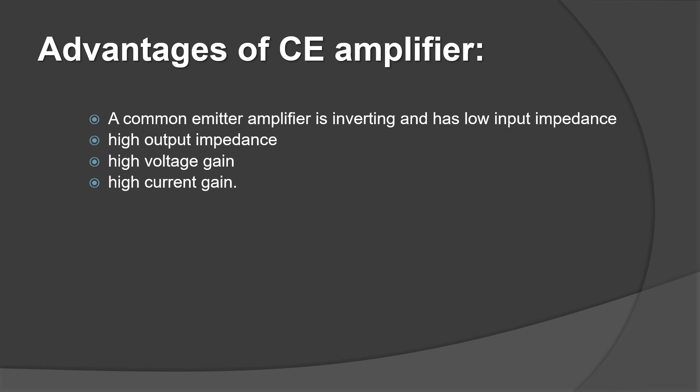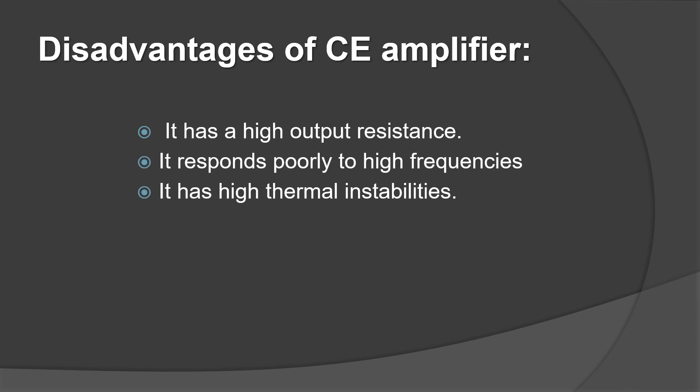These are the advantages of common emitter amplifier: it has low input impedance, high output impedance, and high voltage and current gain. There are disadvantages too. It responds very poorly to high frequencies and it has high thermal instabilities.